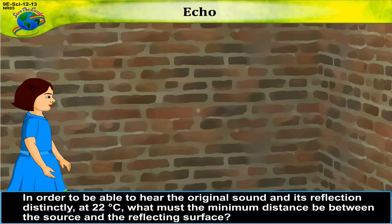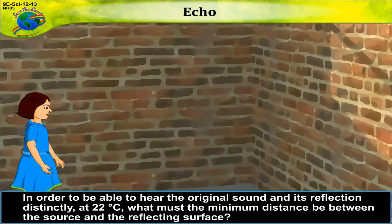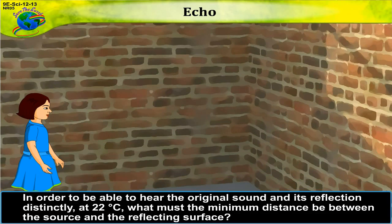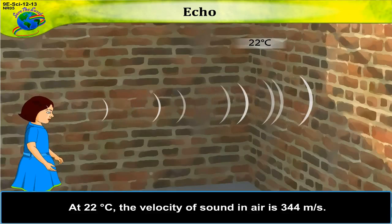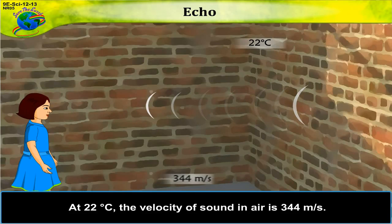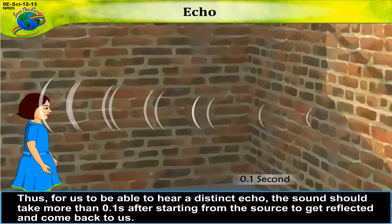In order to be able to hear the original sound and its reflection distinctly at 22 degrees Celsius, what must the minimum distance be between the source and the reflecting surface? At 22 degrees Celsius, the velocity of sound in air is 344 meters per second. Our brain retains a sound for 0.1 second.